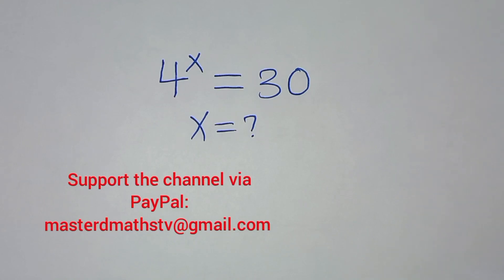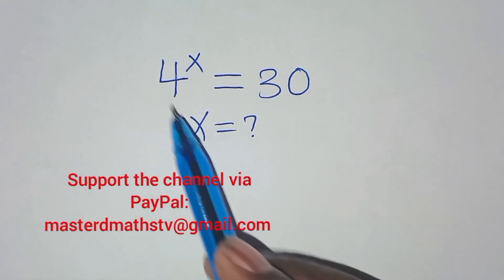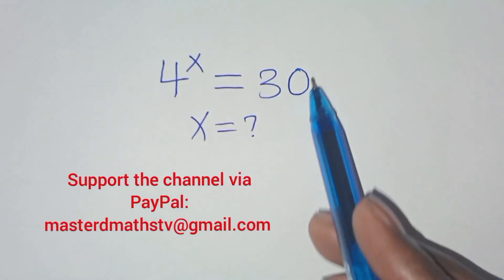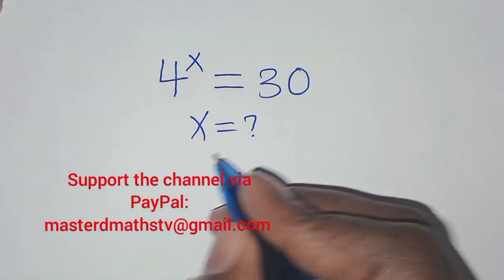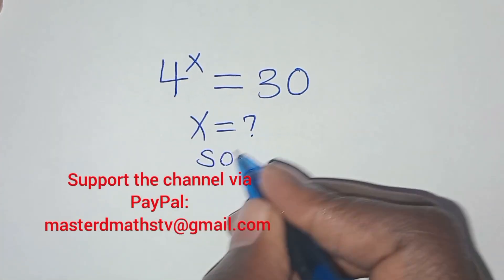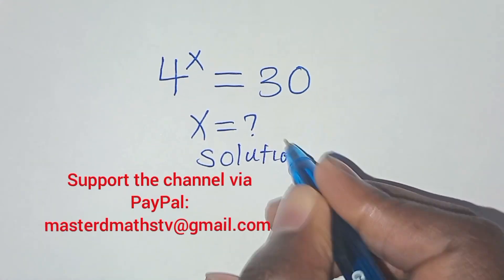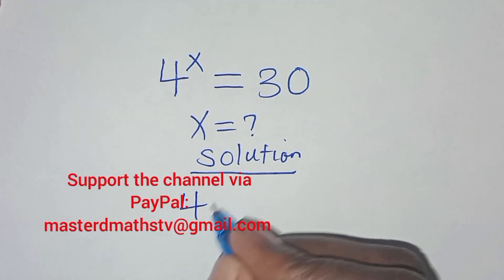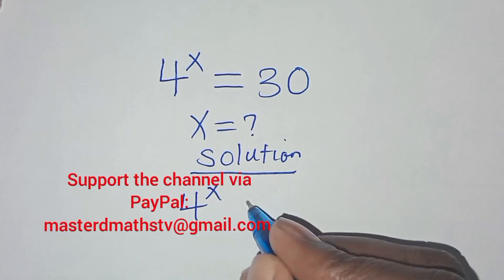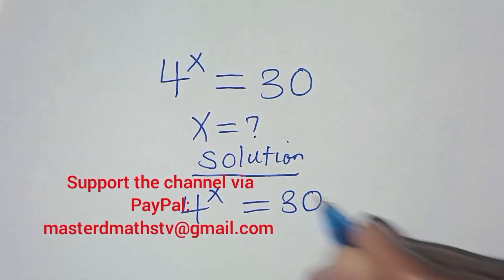Hello everyone, you are welcome to solve this nice exponential problem: 4 to the power x is equal to 30. What is the value of x? From here, we have 4 to the power x equals 30.